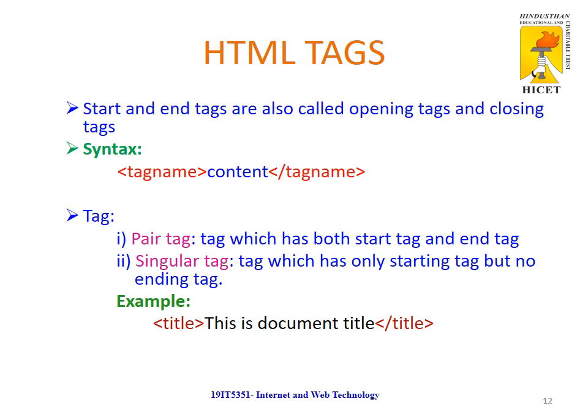For example, the title tag represents a pair tag. In between the title tags, there is content — in this case, 'this is document title'.